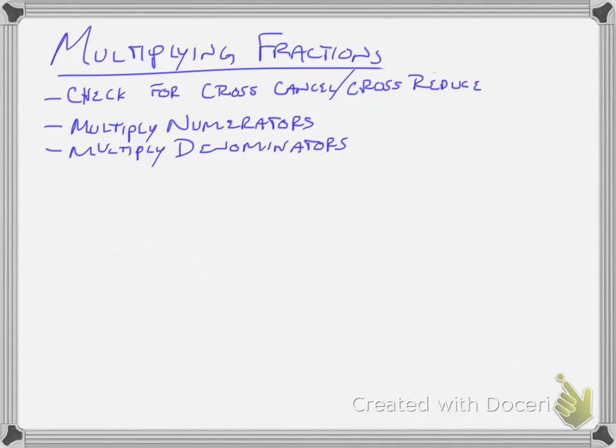For multiplying fractions, you do not need a common denominator. You're first going to check to see if you can cross-cancel or cross-reduce, then multiply straight across. Multiply the numerators, multiply the denominators. So here's an example, 4 over 5 times 3 over 2. What do I mean by cross-reduce? 2 can go into 4 two times, so that becomes a 1. You're reducing each of them by 2. Now multiply across, 2 times 3 over 5 times 1, and you get 6 over 5.